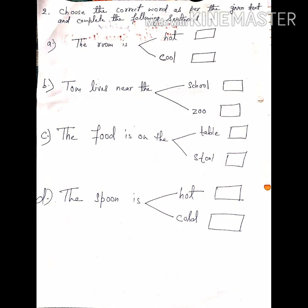Now come to third one. The food is on the table or stool. Where was the food? The food was hot. Tom touched it, and it slipped from his hand. So where was it? The food is on the... where is the food placed? The food is on the table. So you will mark table. The food is on the table. And what is the spelling of table? T-A-B-L-E.